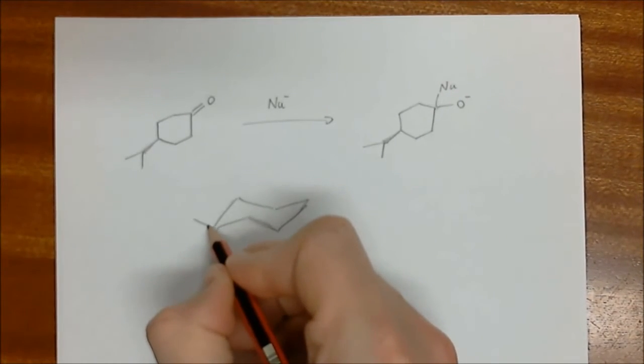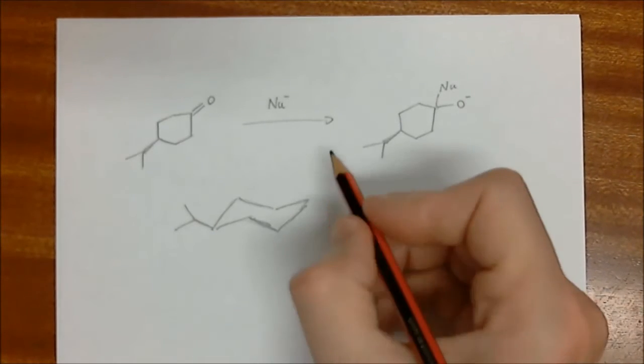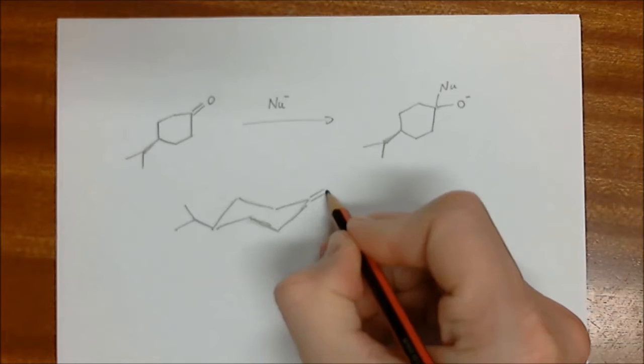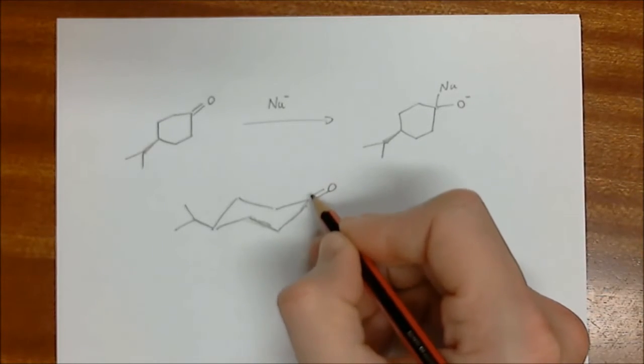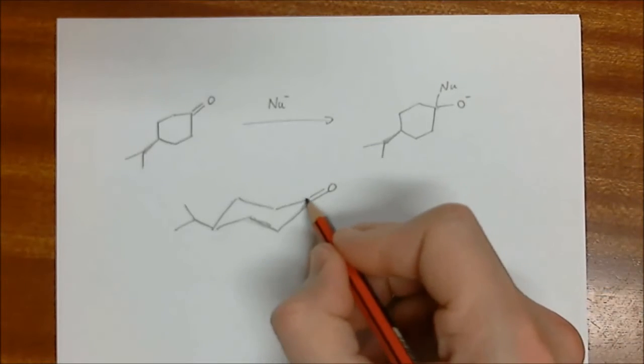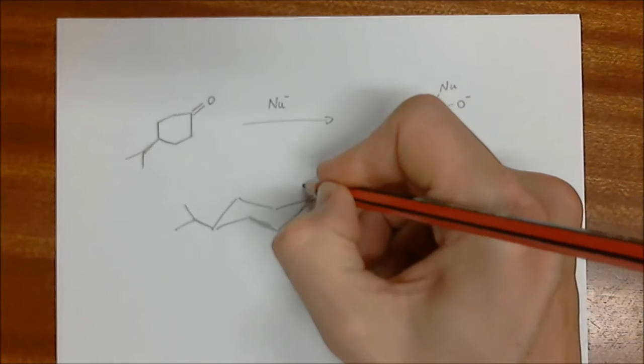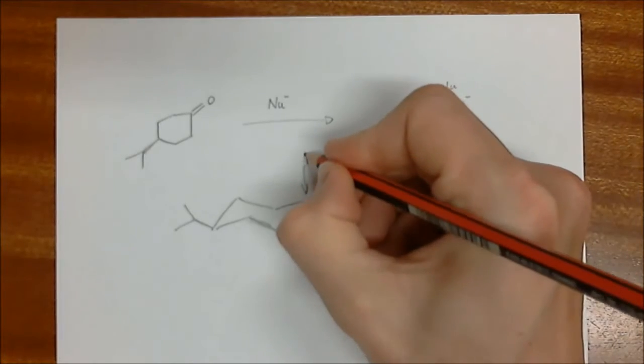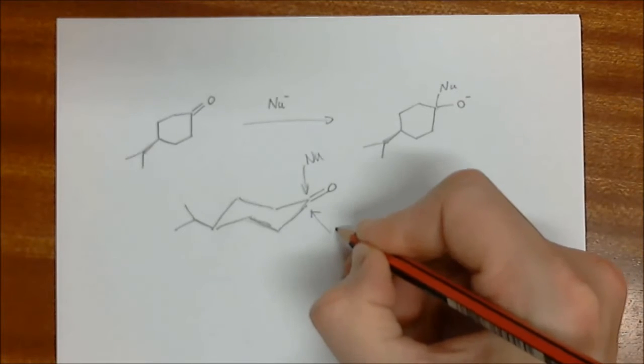The isopropyl group is over here and it's facing equatorial up. And the ketone is over here. Note, it's actually an SP2 center. So it's not coming down in equatorial or axial position. It needs to be sort of facing out like that. And so the nucleophile has two options. It's either coming in from the top like that, or it's coming in from the bottom like that.